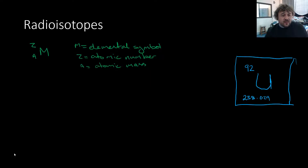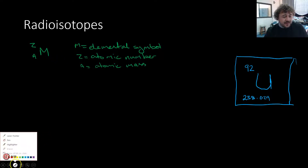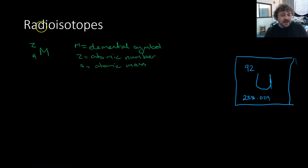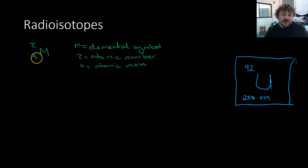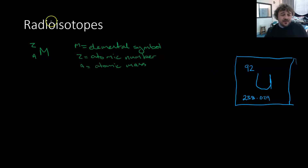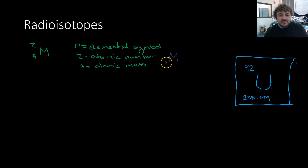This is our standard way of writing an element. Over here we've got M, that's your elemental symbol. Z up here is the atomic number, and A is the atomic mass. That's the way it appears on your periodic table. But when we're writing it out in an equation, you're going to do it backwards — so it's going to be M, Z, A.